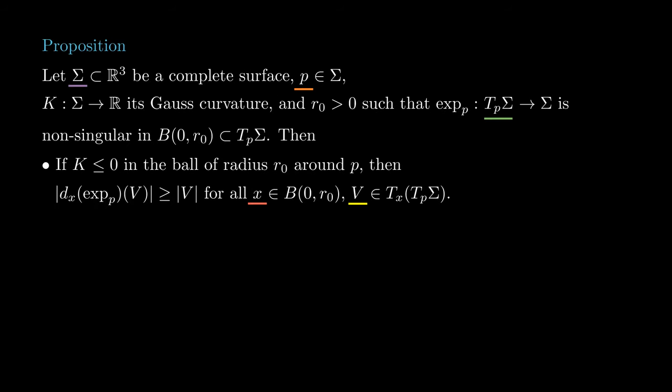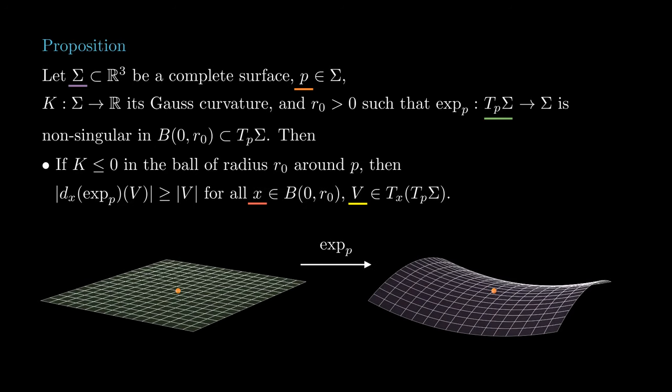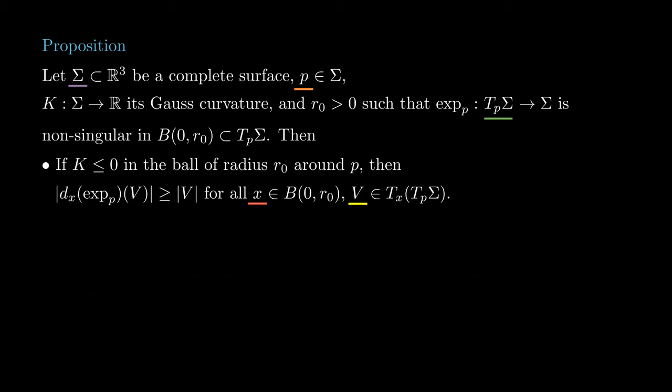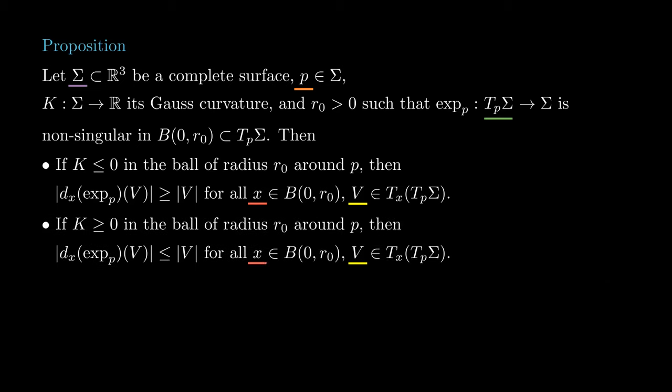For the second part, we will need a general proposition involving the exponential map. Consider a complete surface sigma with Gauss curvature k, p in sigma, and the exponential map exp from Tp sigma to sigma. Assume r0 is such that the differential d exp is injective at each point in the ball of radius r0 around 0 in Tp sigma. Then if k is non-positive, the differential d exp is non-contracting at each point in the ball, and if k is non-negative, the differential d exp is non-expanding at each point.